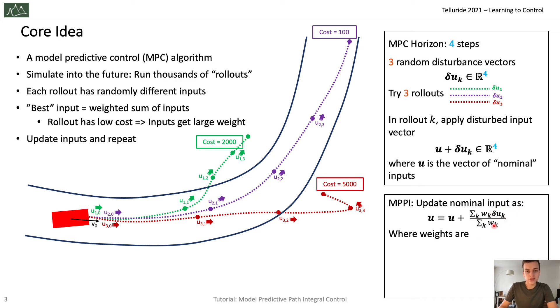And what are the weights? Well, the weights encode desirability. In this case, it's e to the minus 1 over lambda times s_k, where s_k is the cost of the trajectory. So in this case, it can be 2, 100, and 5,000. And lambda is a constant parameter that we can choose.